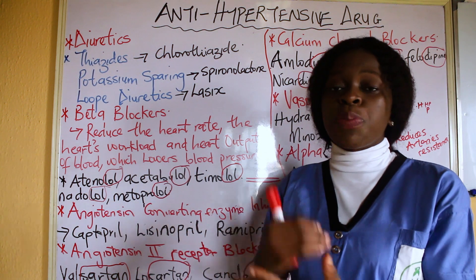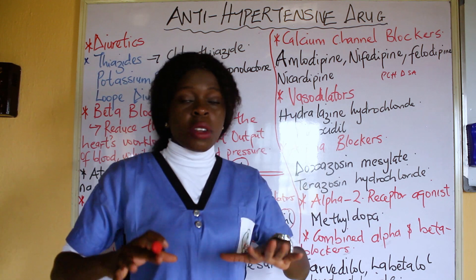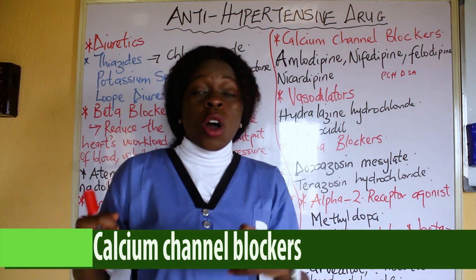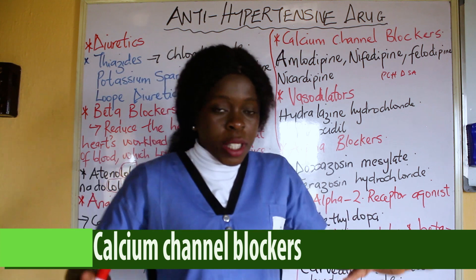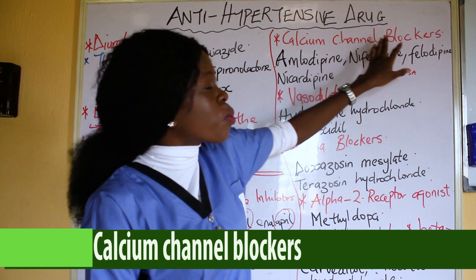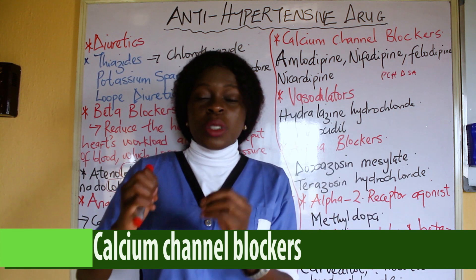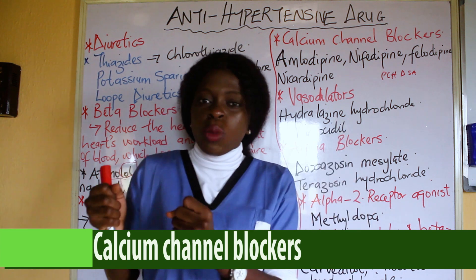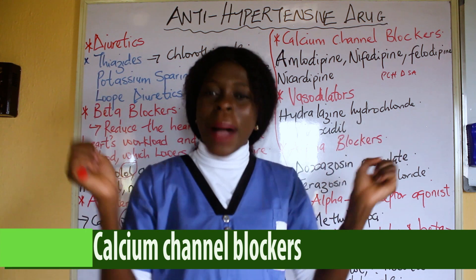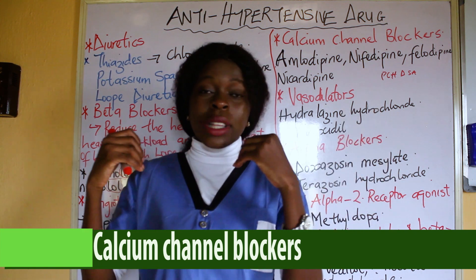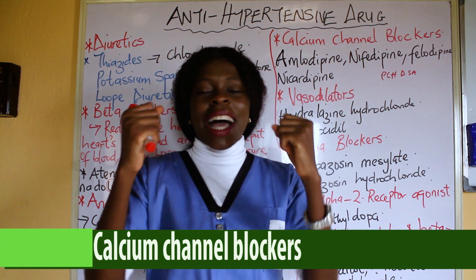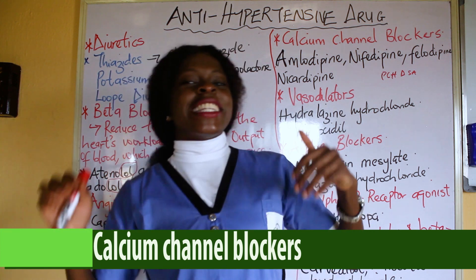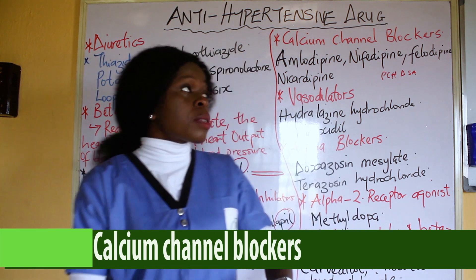Another class of antihypertensive drugs is the calcium channel blockers. Calcium channel blockers stop calcium from going to the heart muscles. Normally, when calcium gets to the heart muscles, it increases the heart contraction. So when there is a blockage of calcium going to the heart muscles, it reduces the contraction of the heart because it is not getting enough calcium, and when the contraction of the heart is reduced, the blood pressure reduces.